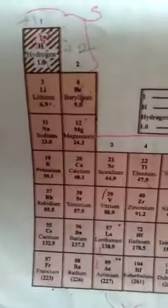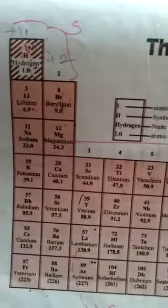And then this periodic table is arranged according to the increasing number of the atomic number. Okay, so the father of the periodic table is who? Mendeleev.